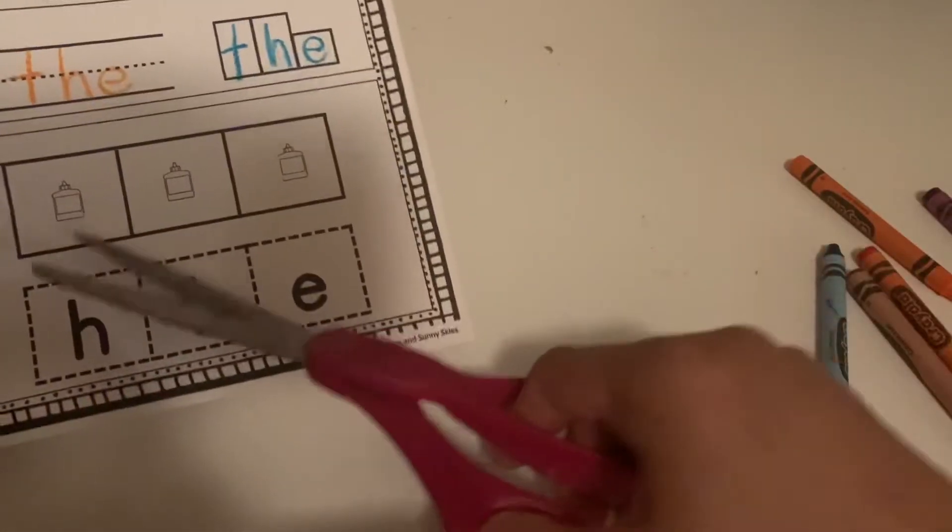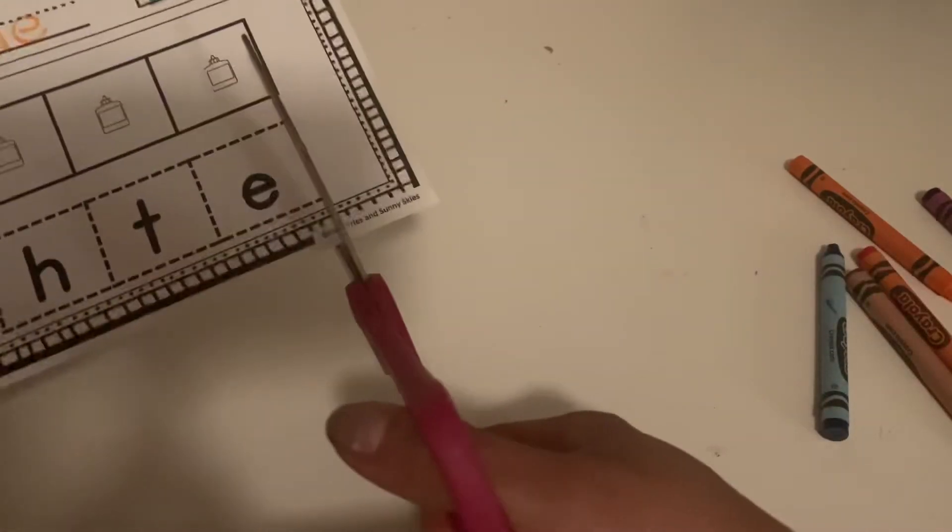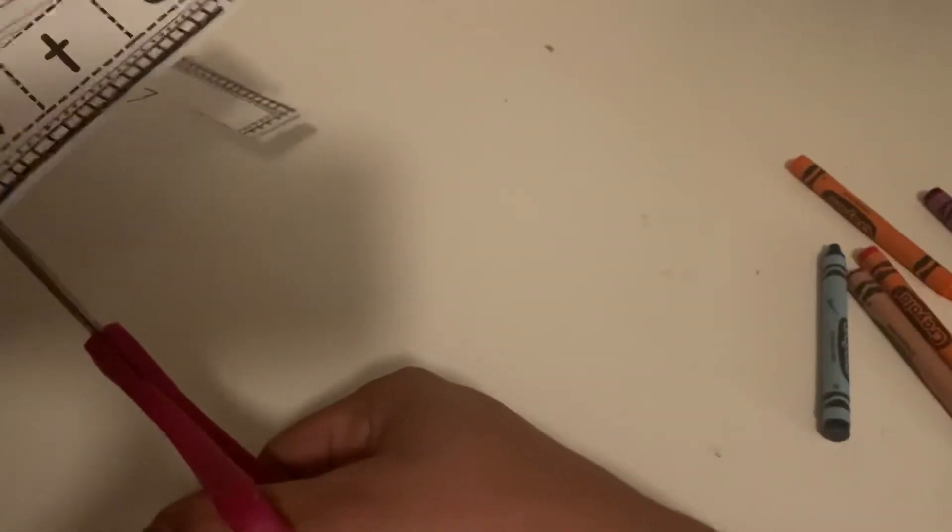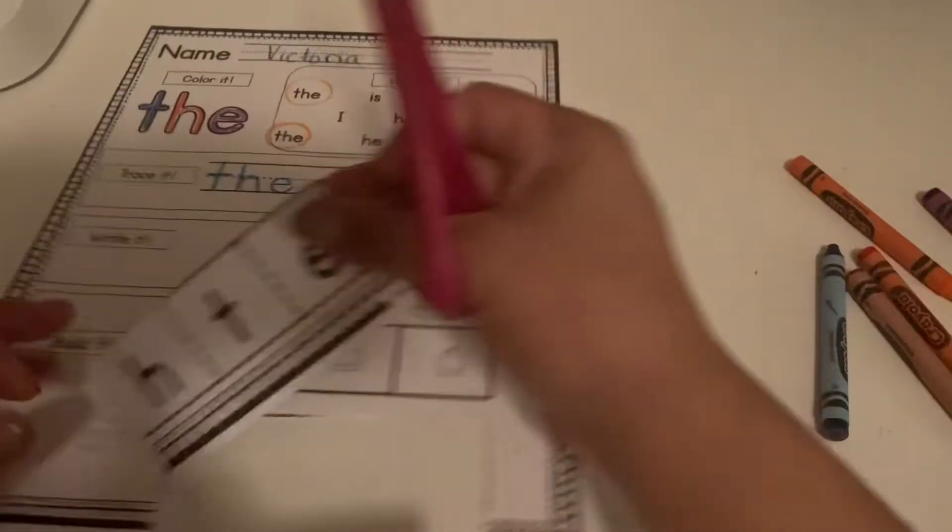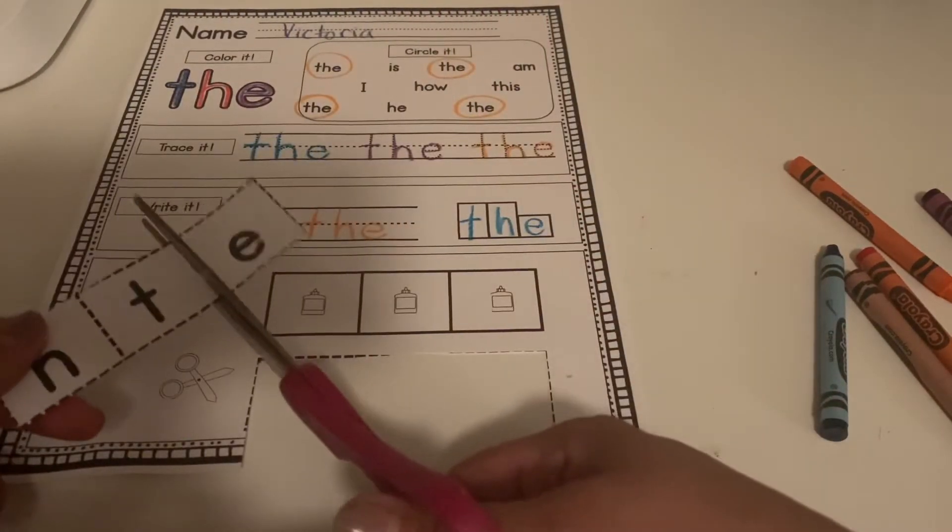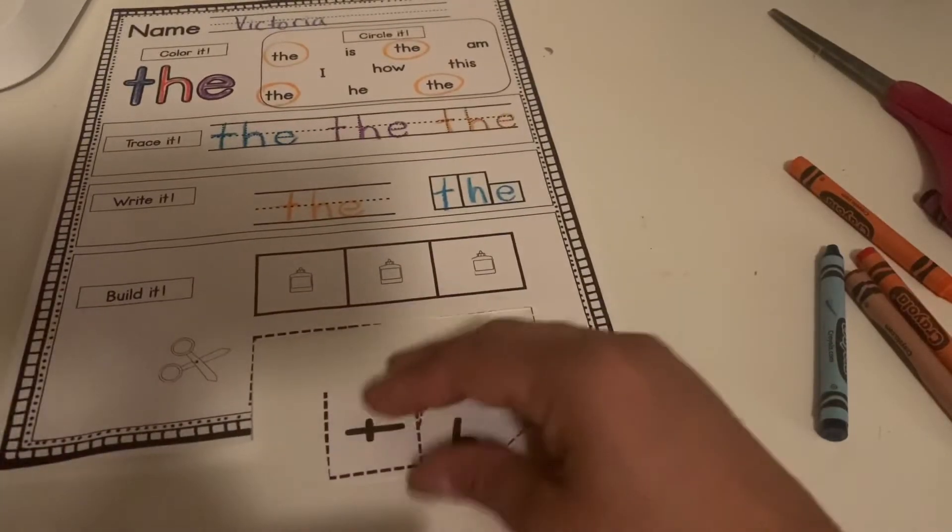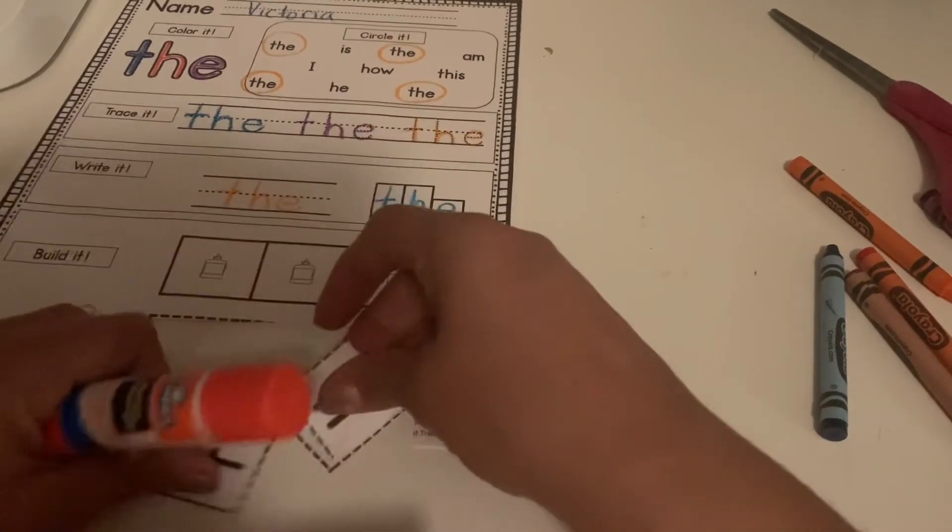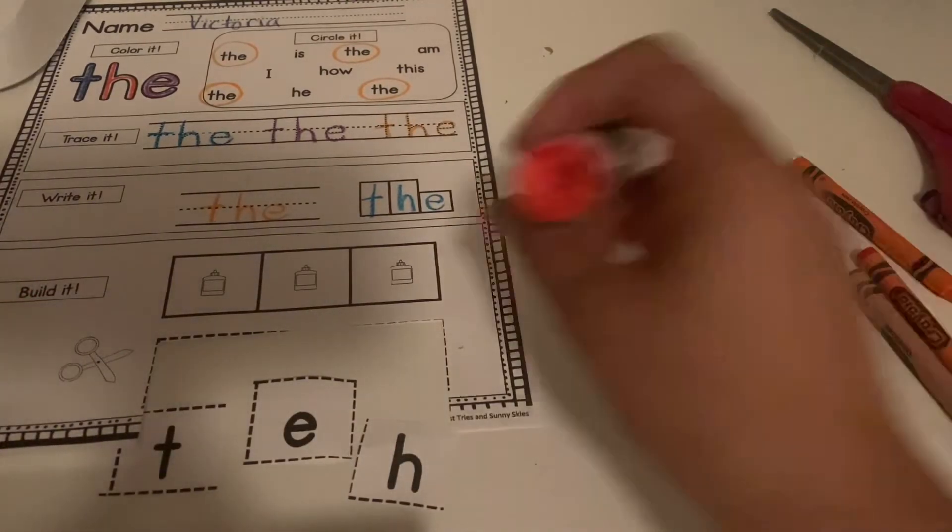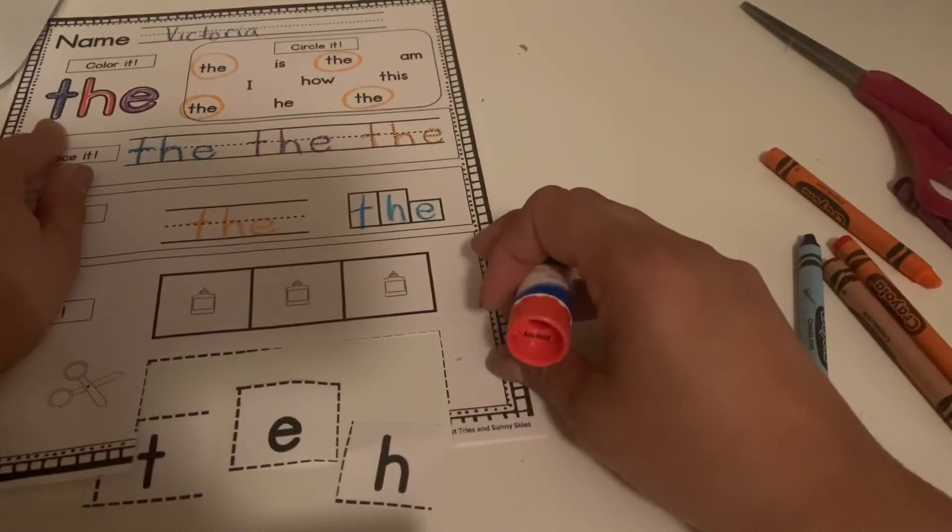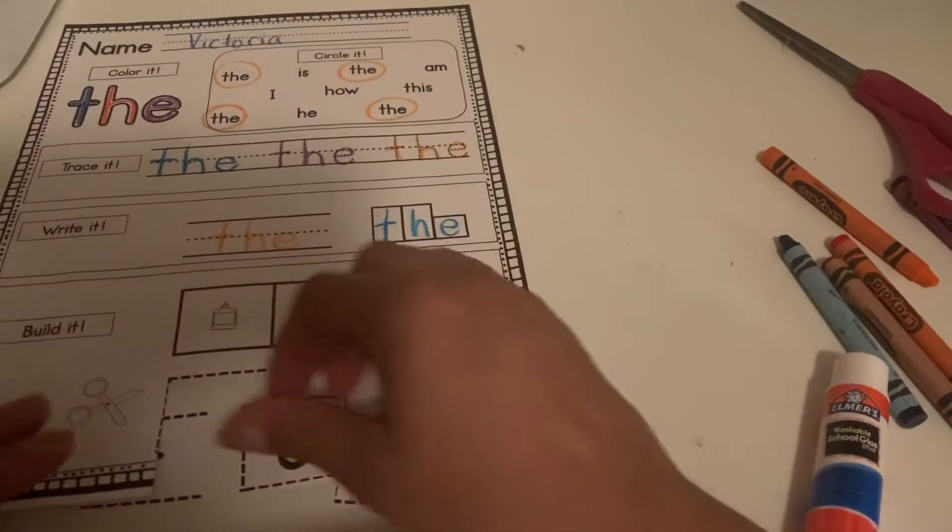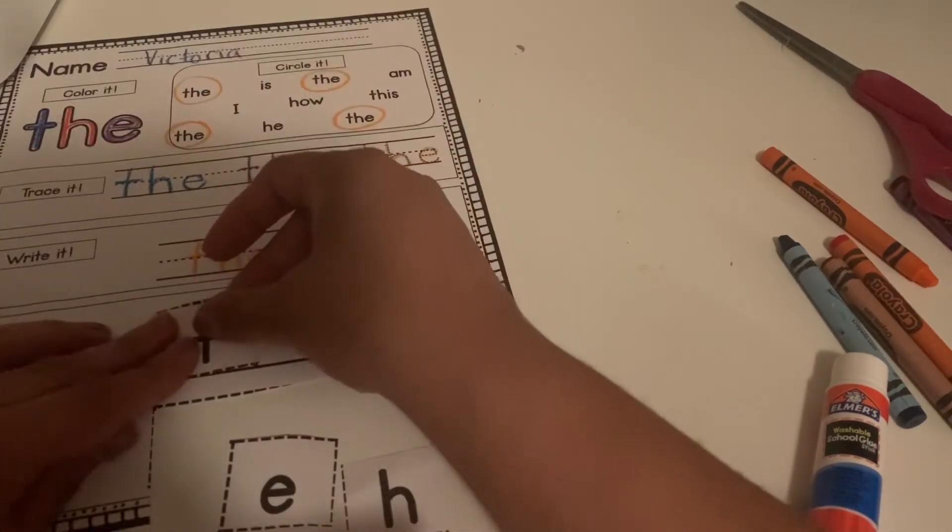Our next step is going to be to build the letter. So to do that, we need to go ahead and cut out our letter tiles. So you're going to cut them out. Now that we have them kind of mixed up, we're going to spell the word 'the.' So let's look up here. What is our first letter? Go ahead and tell your support person. What letter do we need first? All right, we need the letter T. So let's find the letter T.